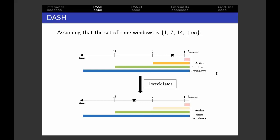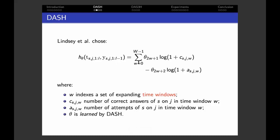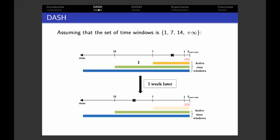Now I'd like to give you a brief insight on how these time windows work in the DASH model. Let's assume that the set of time windows chosen by the human expert is one day, seven days, fourteen days, and plus infinity. Also assume that the student had only one attempt on the item three days before. Then three out of four time windows would be active in this situation. The first time window, the one-day time window, is not active because the attempt occurred more than one day before. But now, let's take the same situation one week later. Now there are only two active time windows, the fourteen and the plus infinity time window. This attempt is not in the seven-days time window anymore because now it occurred ten days before.